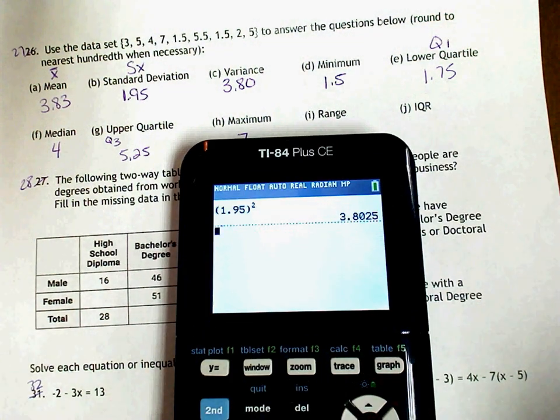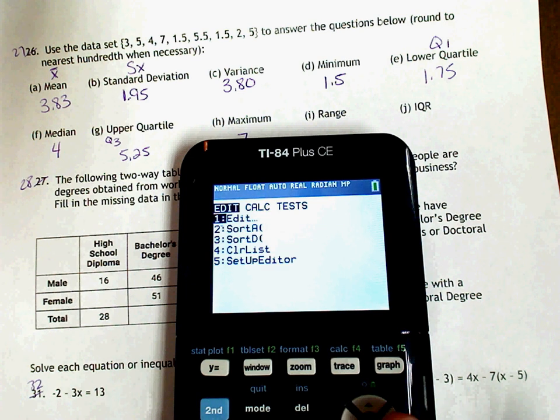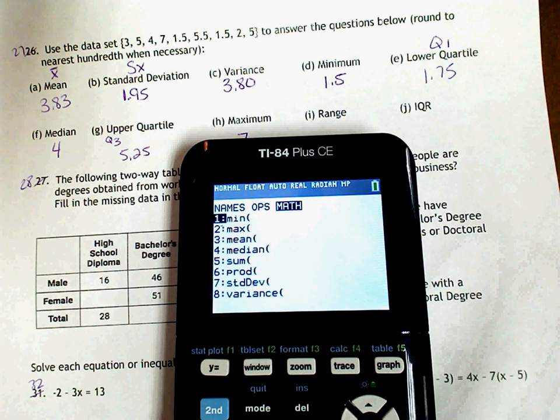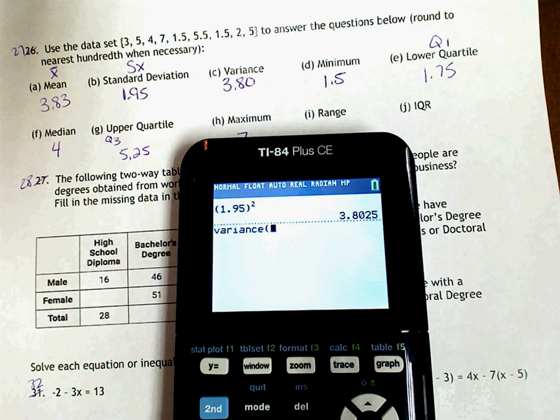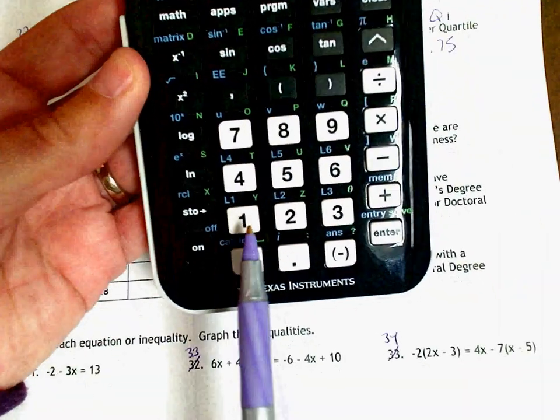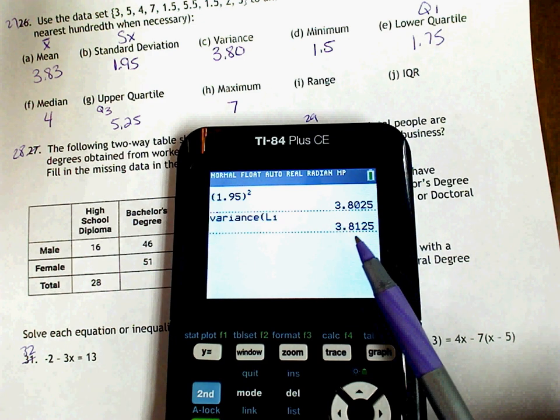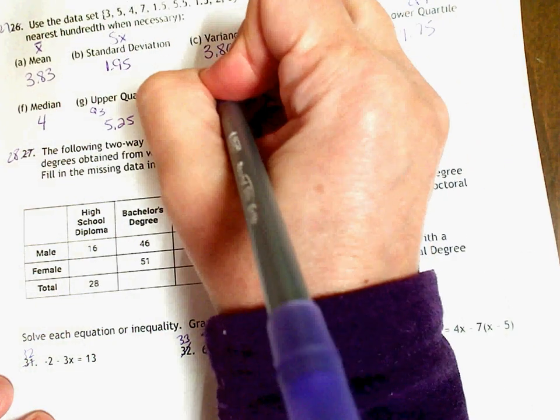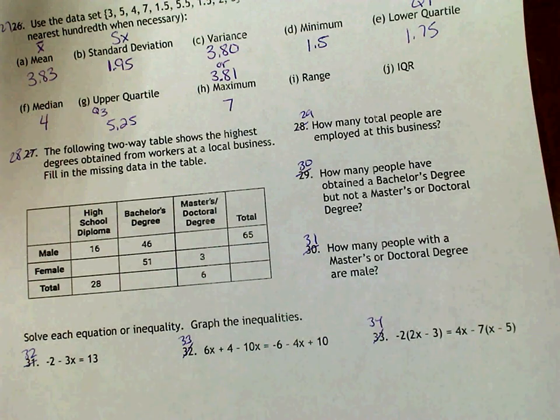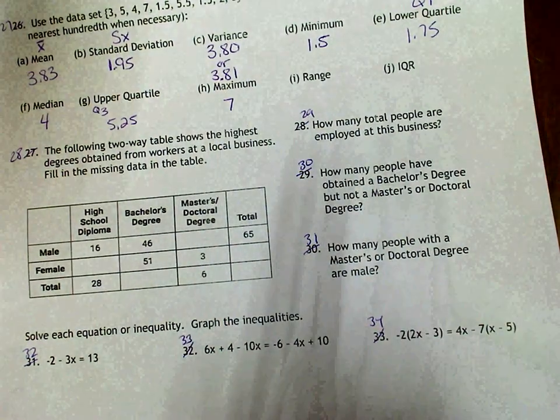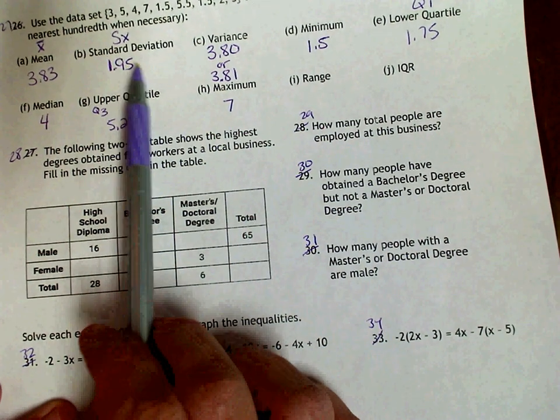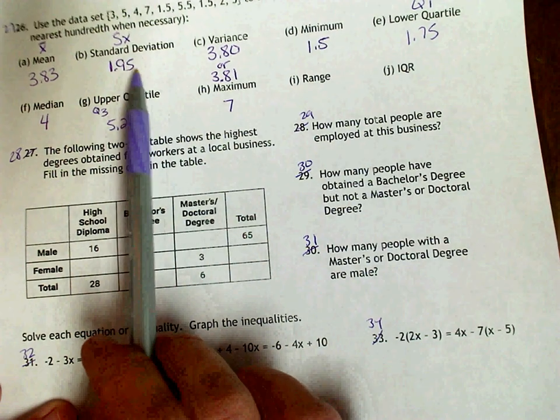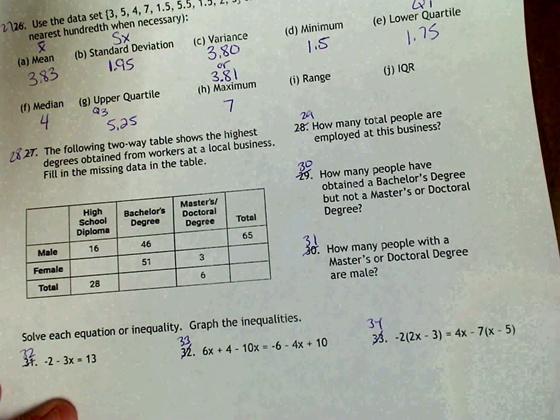Now, the other way to do it is to go to second and then stat, go over to math. And you'll notice that number 8 says variance. So click 8. And then we want to tell it to find the variance of our table. And our table was L1. So if you'll look on your calculator, L1 is the blue right above 1. So we have to hit second and then number 1. So second and number 1. And then enter. And this gives me 3.81. So it's a little different. And your teachers are aware of that. We know that you could get two possible answers here. Those are the only two answers. Because we rounded this, so we need to use this number. Don't put in more numbers and then square it. Just use this number here and square it. Or go find the variance like we did right here.